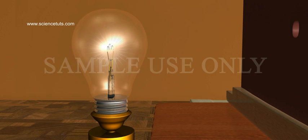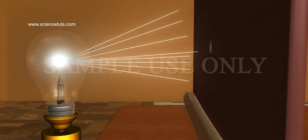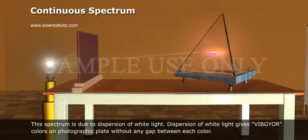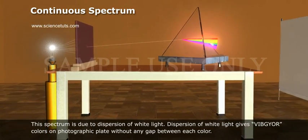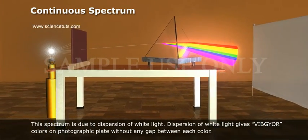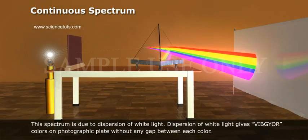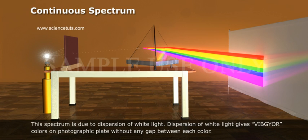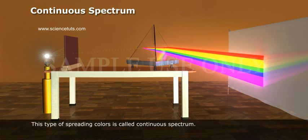Continuous Spectrum. This spectrum is due to dispersion of white light. Dispersion of white light gives VIBGYOR colors on photographic plate without any gap between each color. This type of spreading of colors is called Continuous Spectrum.